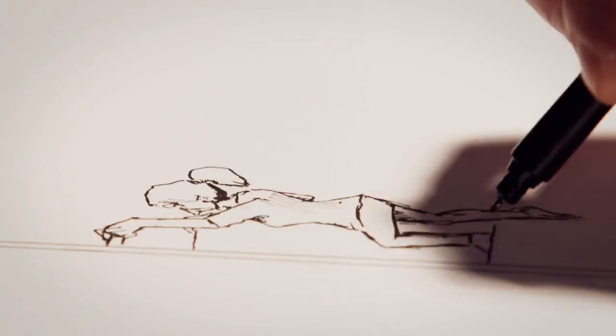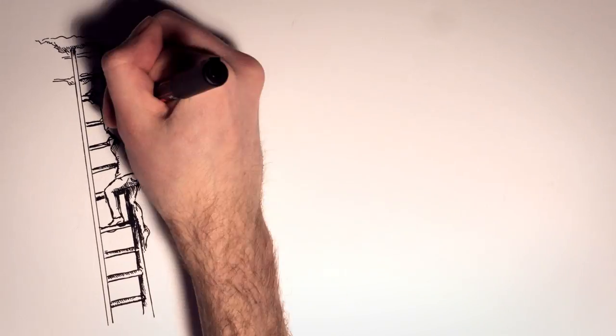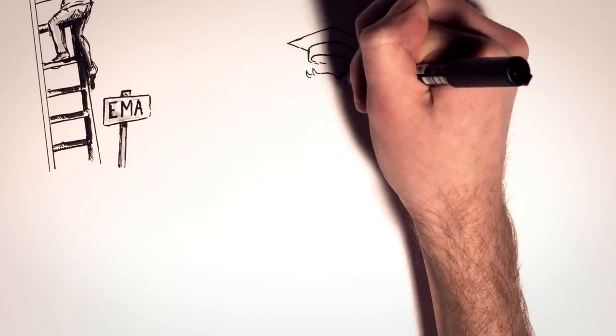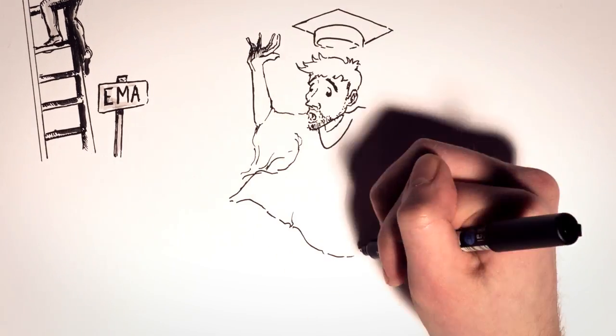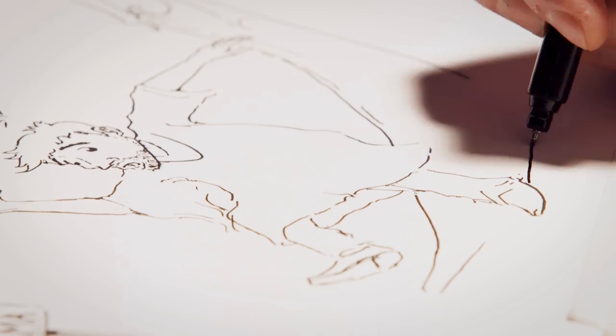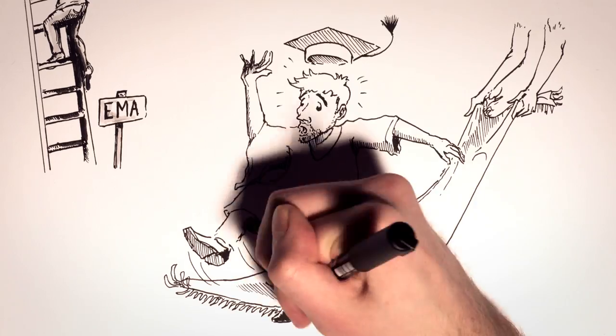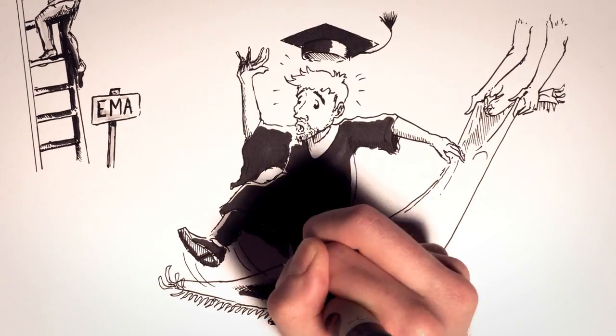The Education Maintenance Allowance used to help young people from lower income backgrounds to complete further education in England. Slapping a massive price tag on university education and removing financial support for those that need it means that we are denying young people the right to achieve their full potential.